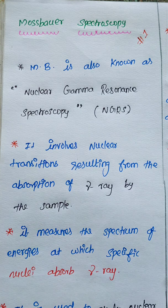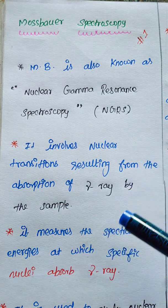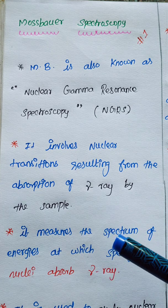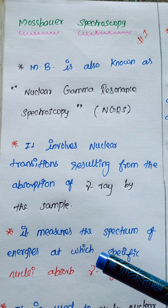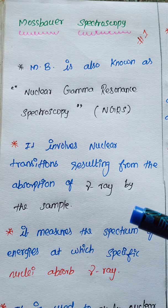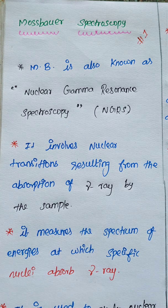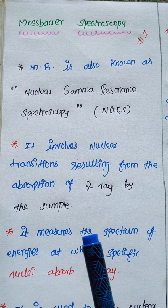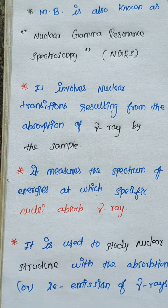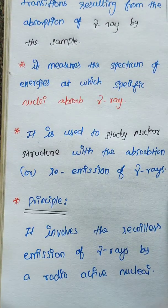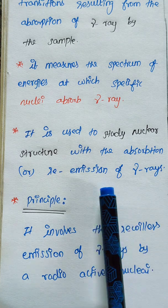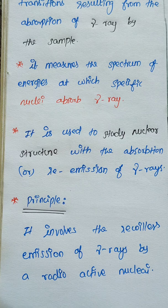It involves a nuclear transition resulting from the absorption of gamma rays by the sample. The source gamma rays are absorbed and they are involved in the transition. We analyze the samples that have absorbed the gamma rays in the transition. From this graph, we can get information about the unknown sample. It measures the spectrum of energies at which specific nuclei absorb gamma rays. It is also used to study nuclear structure through the absorption or re-emission of gamma rays.